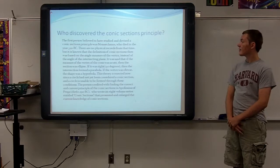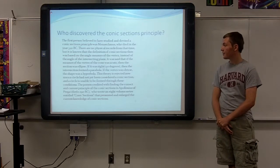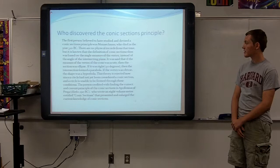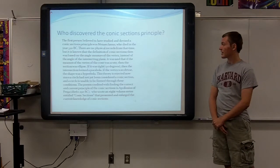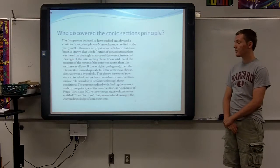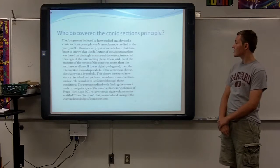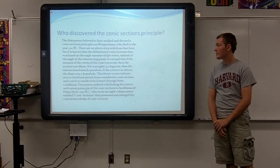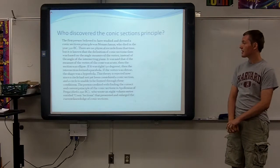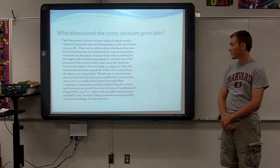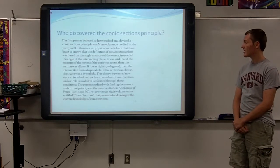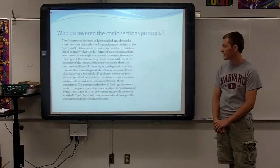It was said that if the measure of the vertex of the cone was acute, then the section was an ellipse. If it was right, so at 90 degrees, then the intersection formed a parabola. If the vertex was obtuse, then the shape was a hyperbola. This theory is rejected now, since a circle has not yet been considered a conic section, and a circle is unable to be formed through these conditions.